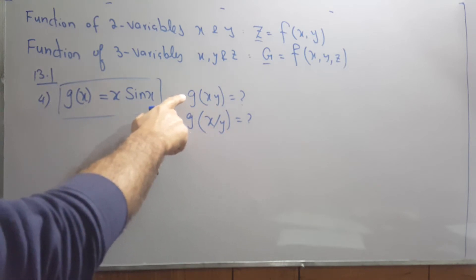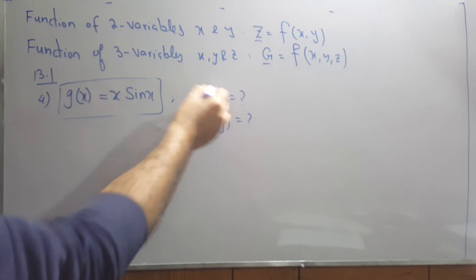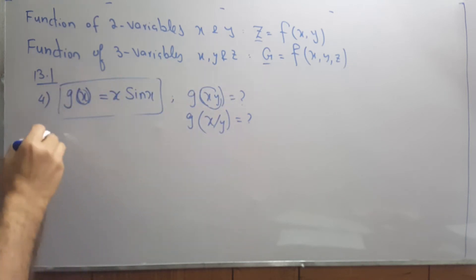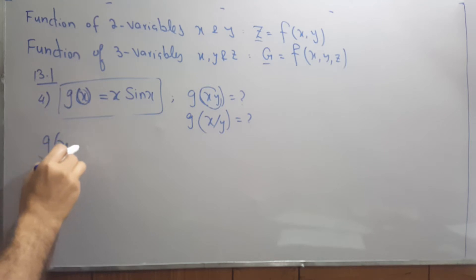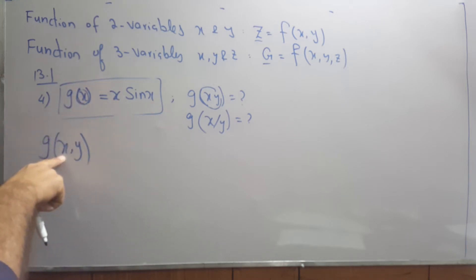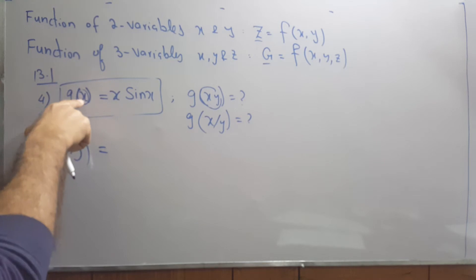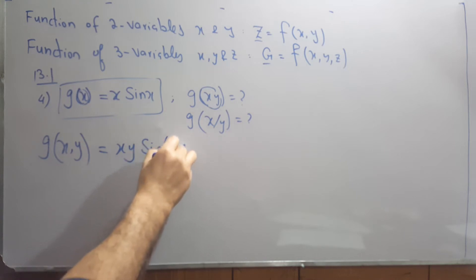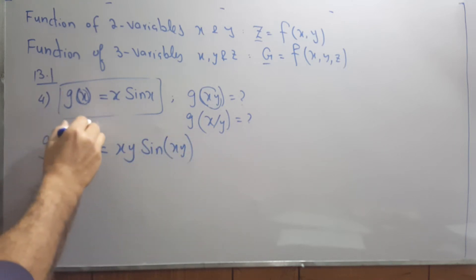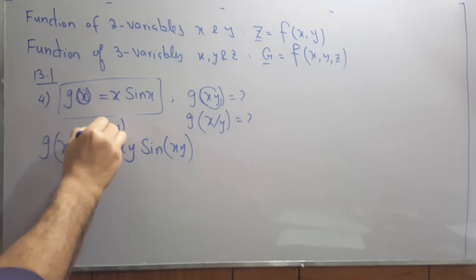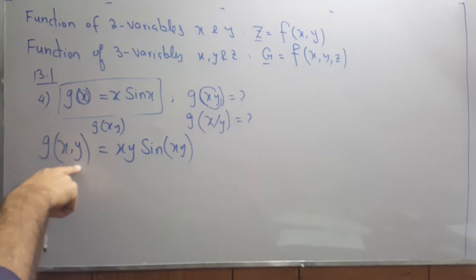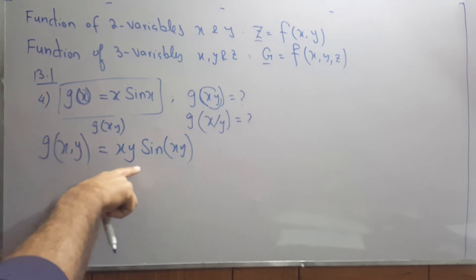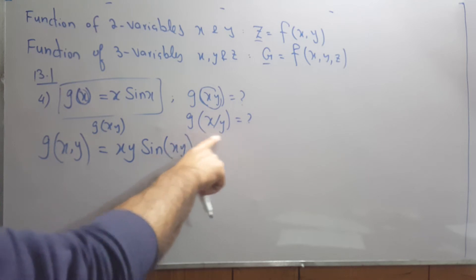So what they are saying is: find g(x, y), which means instead of x in the original function, you replace it with the term x·y. So this becomes g of x comma y — g is the function of x and y, that's why we write it x comma y. For the x, we replace with the value x·y, giving us x·y and then sine(x·y). We do not write this as g of x·y, because g is a function of x and y, so instead of writing x·y as a product, we write x comma y.